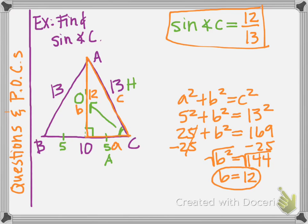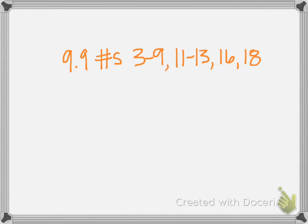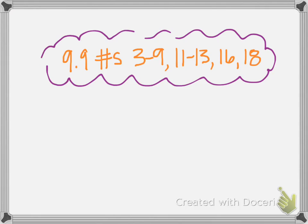Focus on these ratios and remember SOHCAHTOA to help you. Remember, you can only find sine, cosine, or tangent with respect to one of the two acute angles in a right triangle — never from the perspective of the right angle. I've decided not to combine 9-9 and 9-10 since these notes are already pretty long. Here are the 9-9 homework problems — we will work on these in class, but feel free to get a head start. We'll learn 9-10 in the next lesson. Bye!